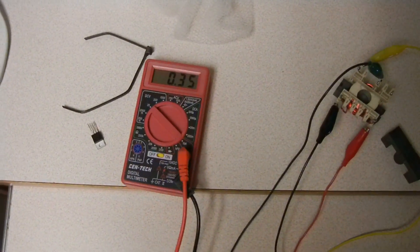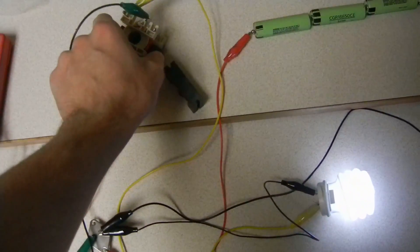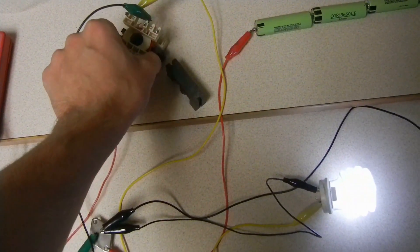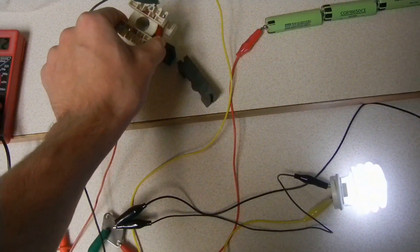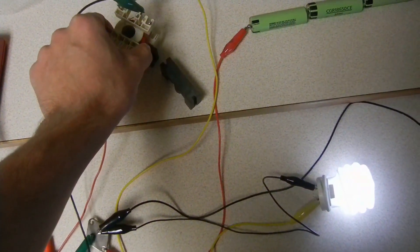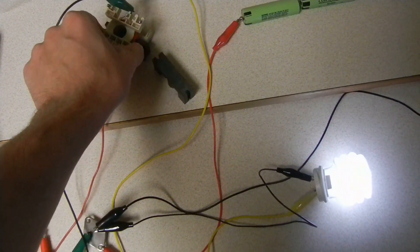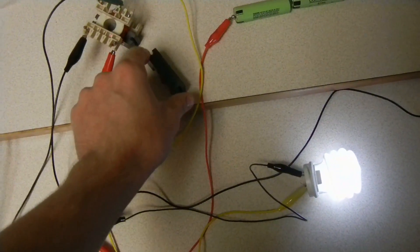But now when you take it all the way off, the ferrite gets dimmer. So with the 2N3055, you need at least a little bit of ferrite.